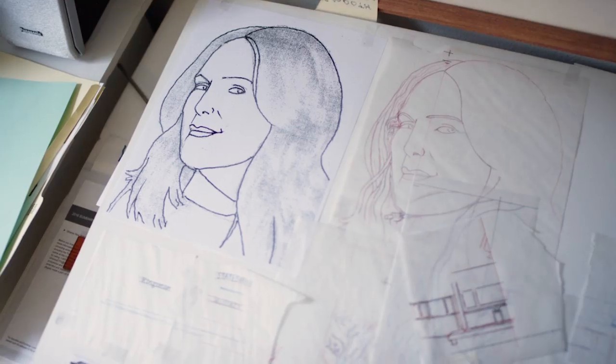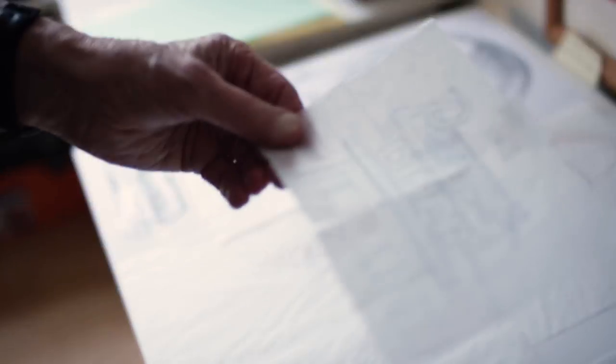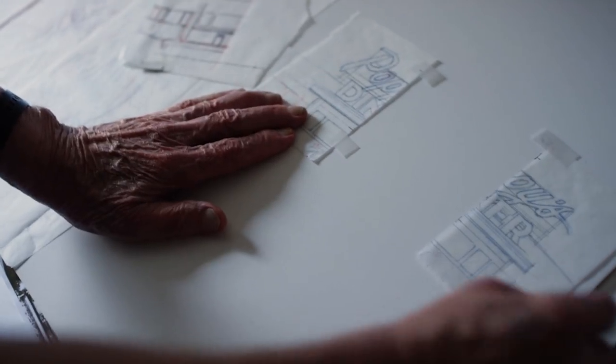This is my enlarged drawing, then I make a tracing of it. All of these little details, this is the Poppy's Diner, and then of course when you fold it, it's supposed to come out like that.